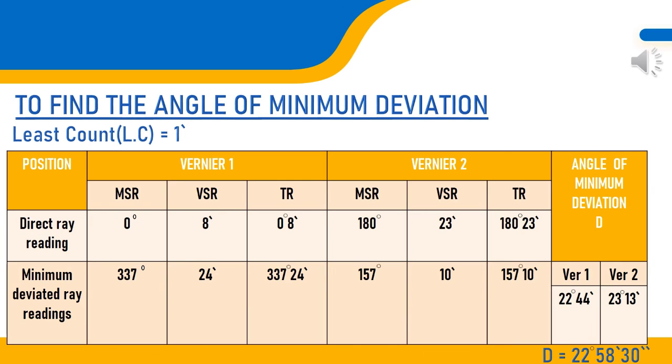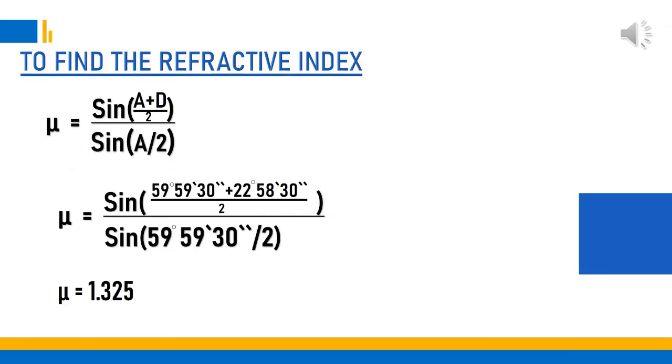The angle of minimum deviation is derived from the vernier readings by subtracting the minimum deviated ray readings from the direct ray readings.